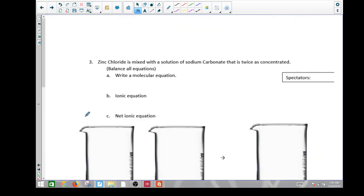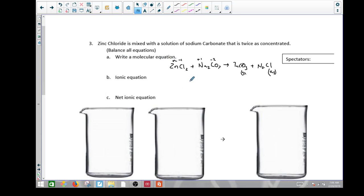Next page. So it says zinc chloride is mixed with sodium carbonate. So I have ZnCl2 plus Na2CO3. Now, as a solubility reaction, the charges on these things never change. So sometimes I like to write them above it. We have zinc carbonate, and then we have sodium chloride. This one will form a solid, and this one will form an aqueous. Zinc chloride is mixed with sodium carbonate that's twice as concentrated.